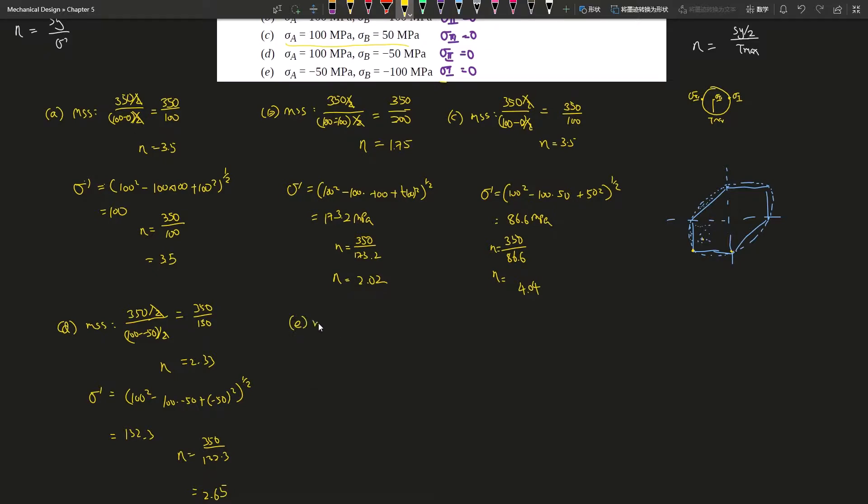And the last one, MSS equals 350. The biggest one is 0. The smallest one is negative 100. So 0 minus negative 100, so equals 350. Again, divided by 2, divided by 2, cancels out, equals 100. That gives you 3.5. And for the bottom, von Mises, it's, let's see, so a is 50. So negative 50 squared plus negative 100 times negative 50 and plus negative 100 squared. Let's bracket these to the, you know, square root with that. And with that, I believe this will give you 86.6 megapascals. And for N, that is going to be 350 divided by the von Mises stress that you just obtained. And in this case gives you 4.04.